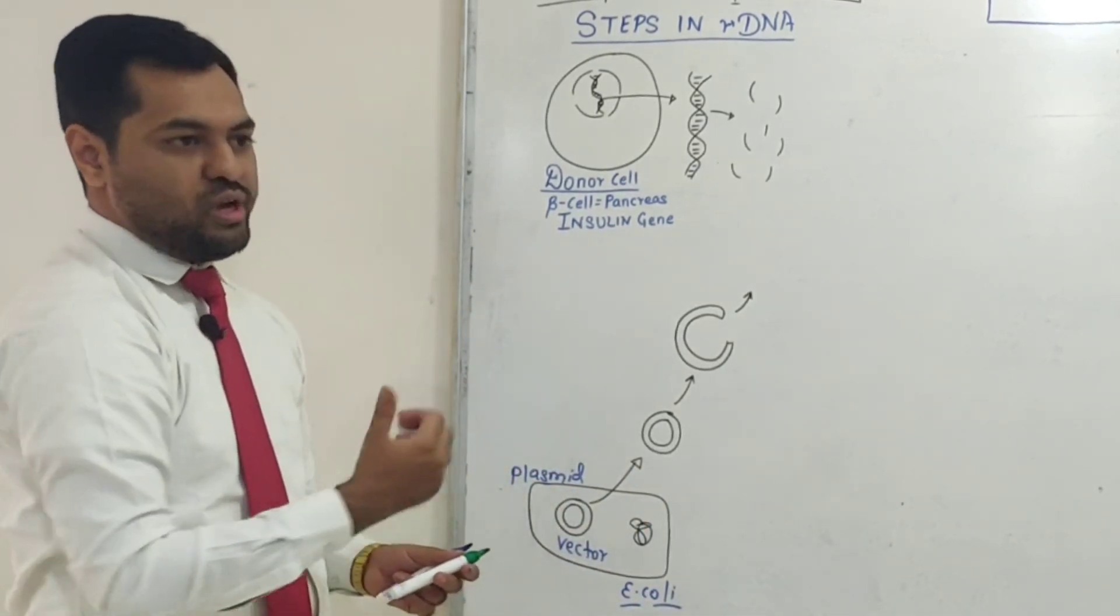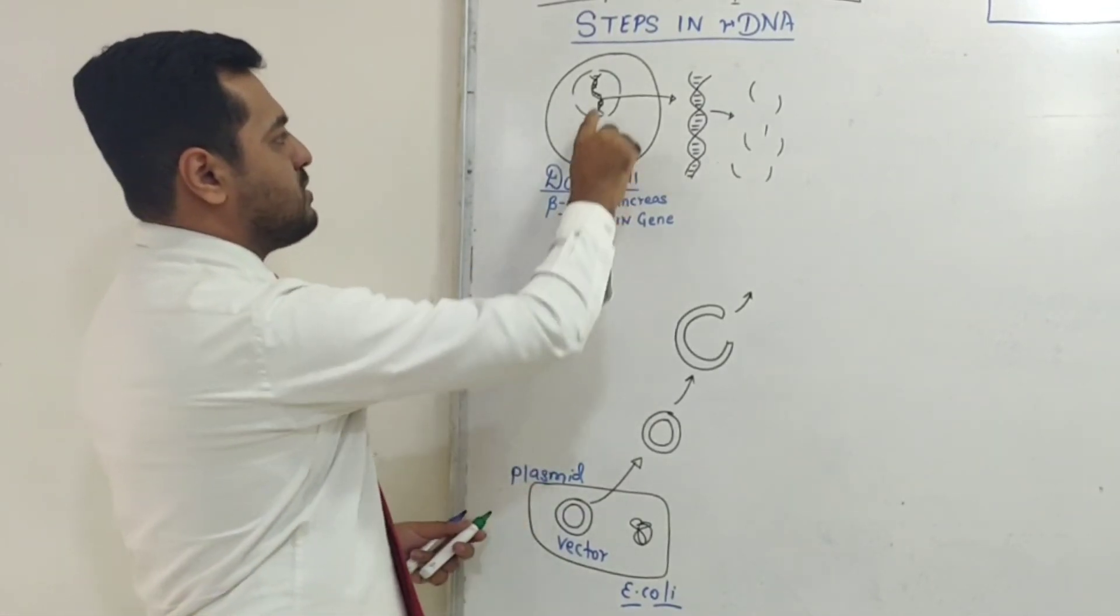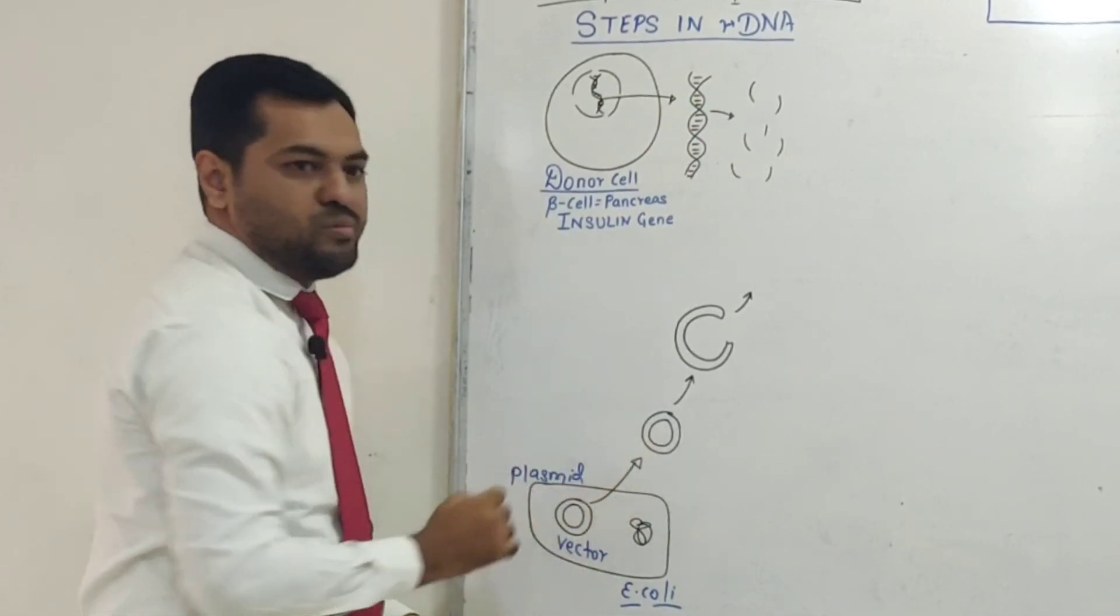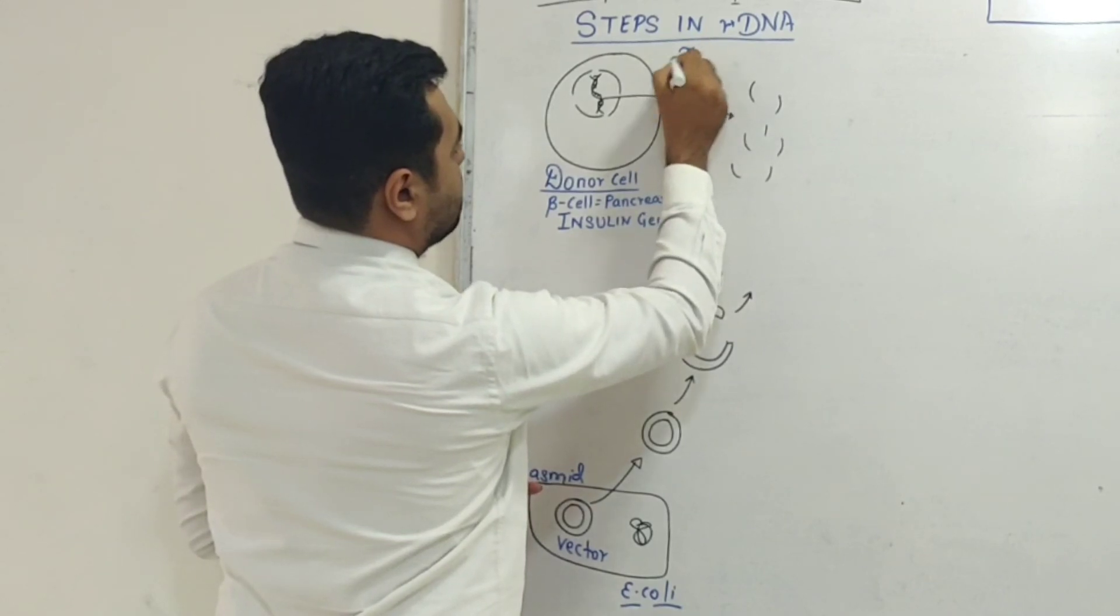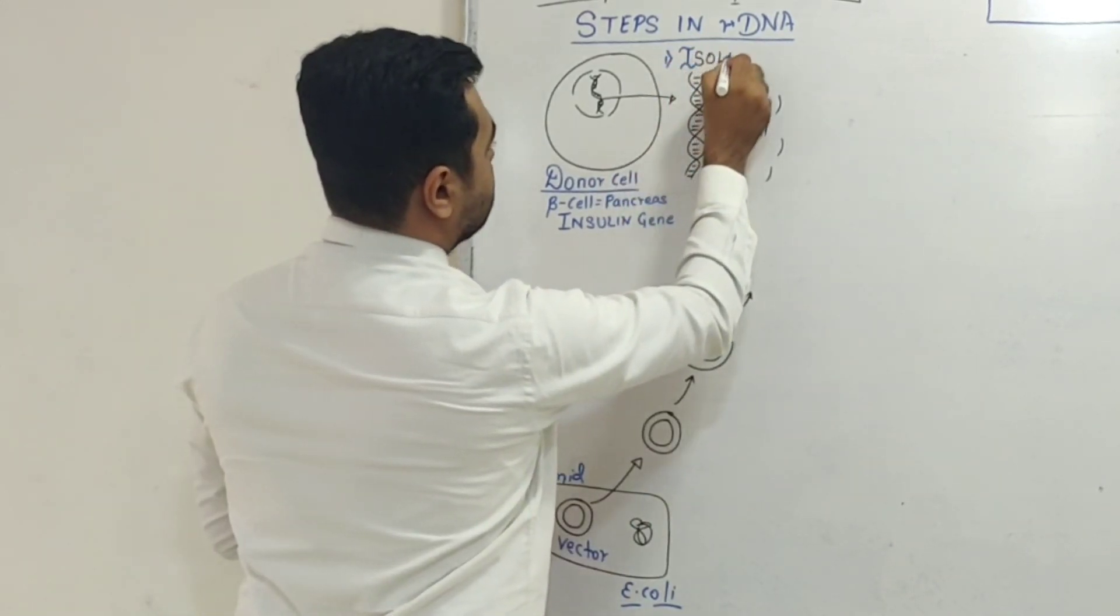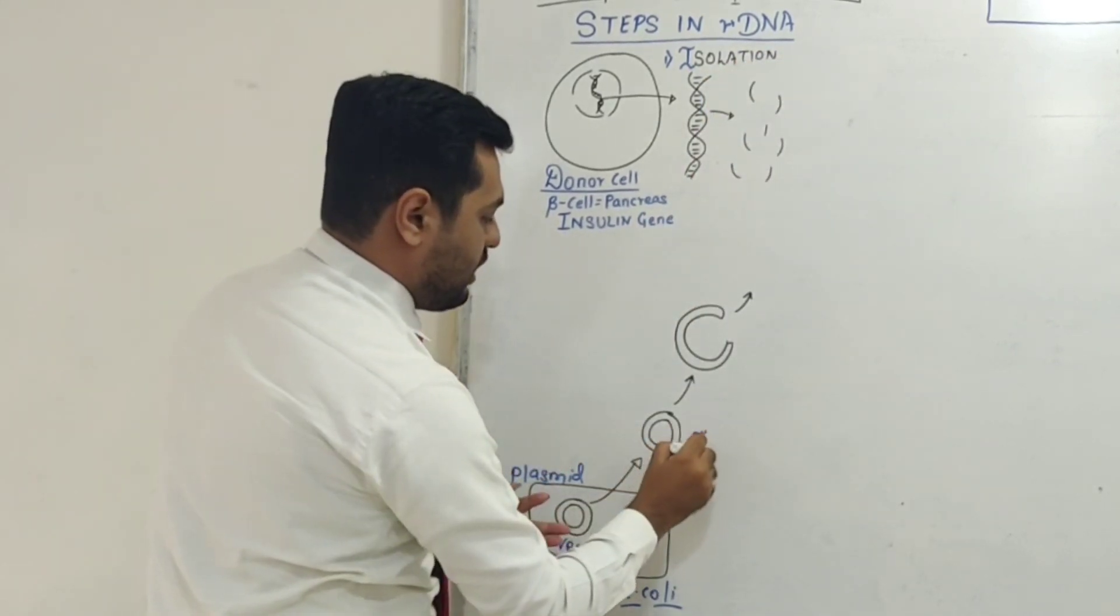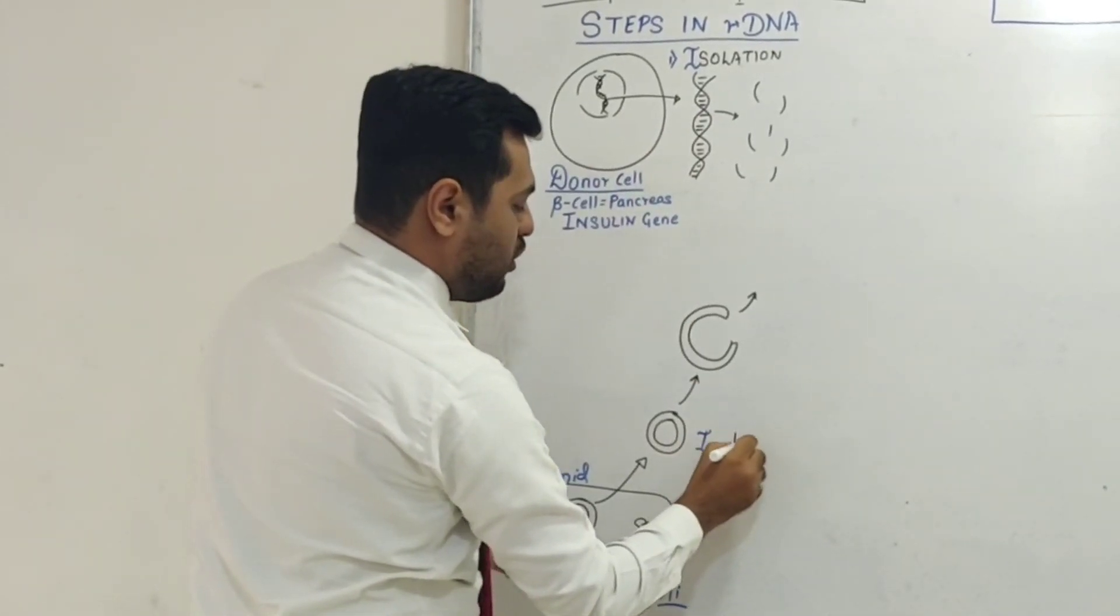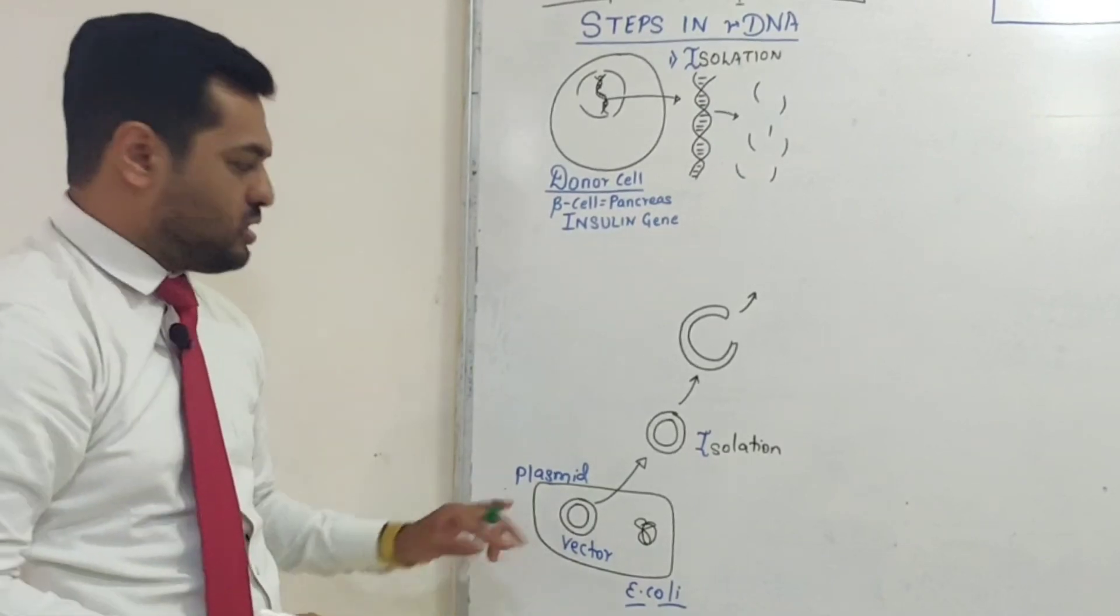Different steps are involved in rDNA technology. The first step is to extract the DNA from the donor cell and extract the plasmid from the vector organism. This first step is called isolation - isolation of the DNA from the donor cell and also isolation of the vector plasmid.